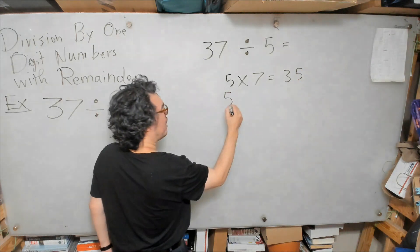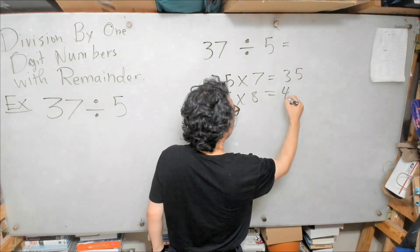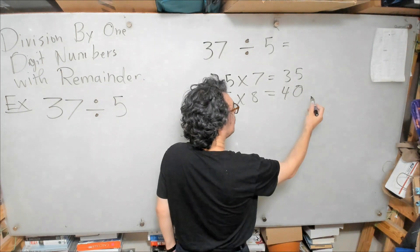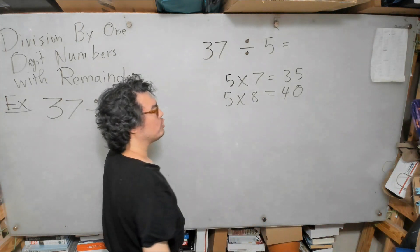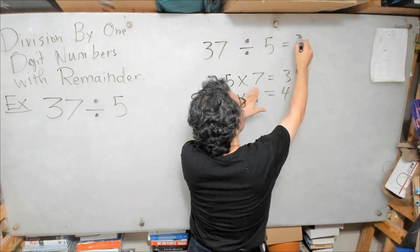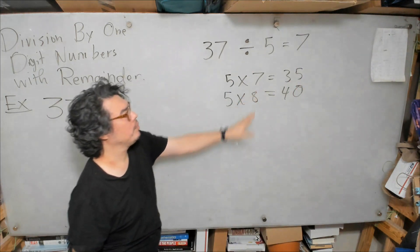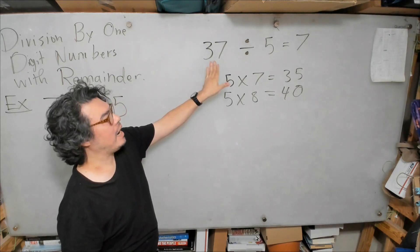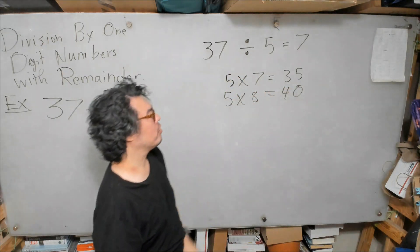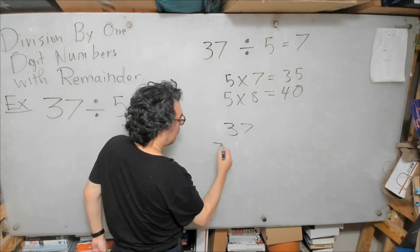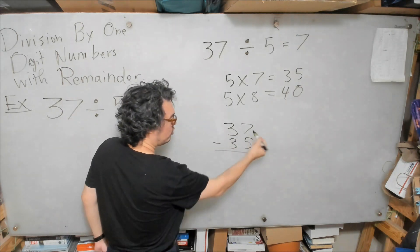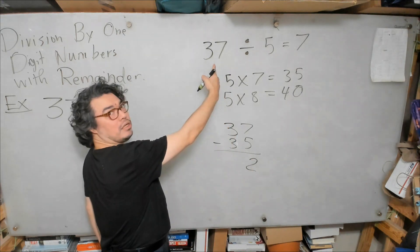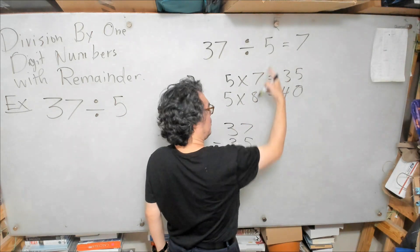And if we look at that, we can see, aha, this one does not exceed, this one exceeds. So we know that the quotient here must be 7. 37 exceeds the 7th multiple of 5 by 2.